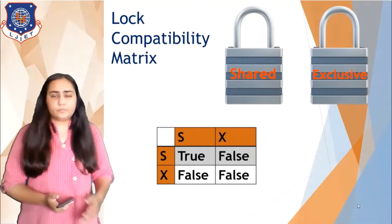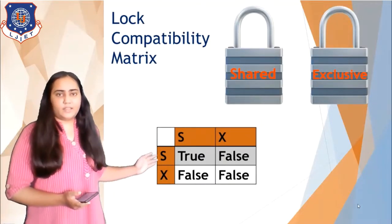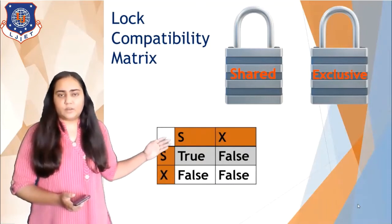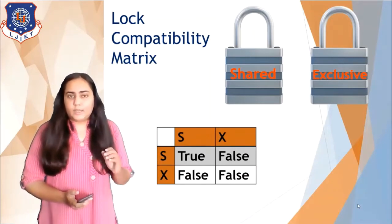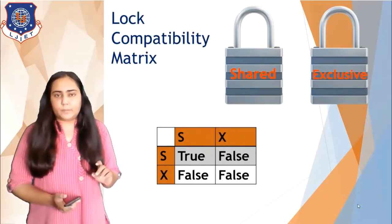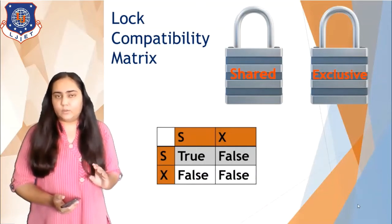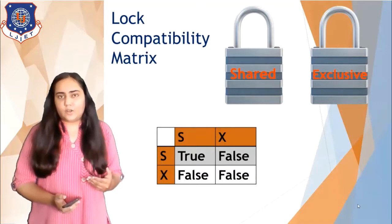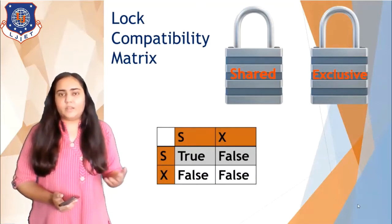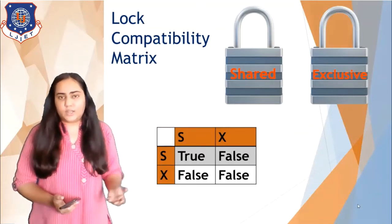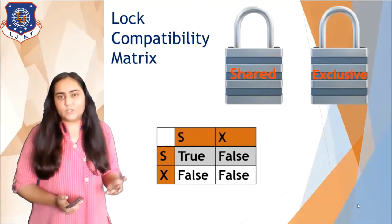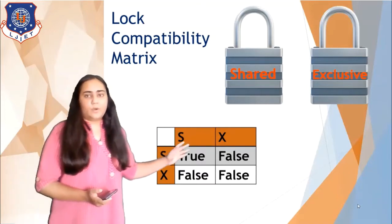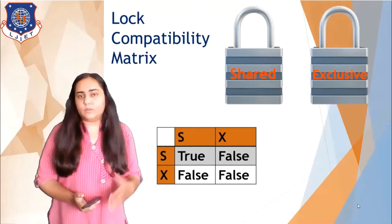The lock compatibility matrix uses S for shared lock and X for exclusive lock. True is written in only one position because the shared lock is compatible only with another shared lock. This means if one transaction holds a shared lock on data item A, then another transaction can also obtain a shared lock on A. But if one transaction holds an exclusive lock on A, then another transaction can neither obtain a shared lock nor an exclusive lock on the same data item due to incompatibility.